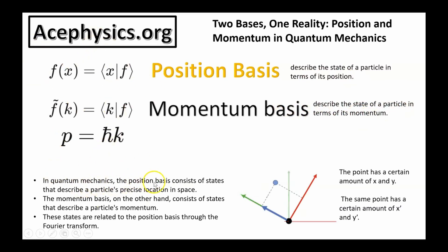In quantum mechanics, the position basis consists of states that describe a particle's precise location in space. The momentum basis, on the other hand, consists of states that describe the particle's momentum. This is a fundamental relationship in quantum mechanics: momentum is equal to h-bar times k, where k is the wave number.